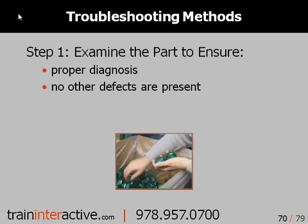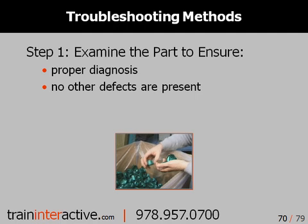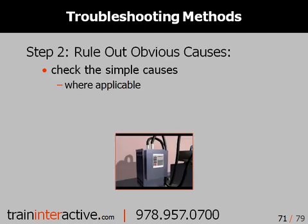Step one: examine the part and make sure that your diagnosis is correct. Step two: although we stress a scientific approach to troubleshooting, you should always investigate the simply obvious causes. For instance, if you have splay, check the material and the dryer to make sure that it is adequately dried.